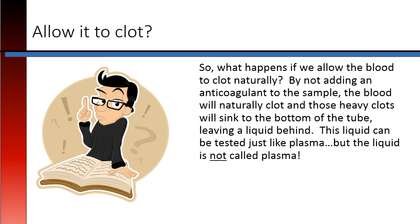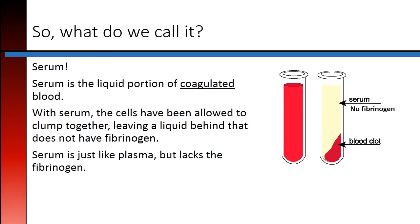So what happens if we allow the blood to clot naturally? By not adding an anticoagulant to the sample, the blood will naturally clot, and those heavy clots will sink to the bottom of the tube, leaving a liquid behind. This liquid can be tested just like plasma, but it is not called plasma — it's called serum. Serum is the liquid portion of coagulated blood. With serum, the cells have been allowed to clump together, leaving behind a liquid that does not have fibrinogen. Serum is just like plasma, but lacks fibrinogen.